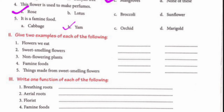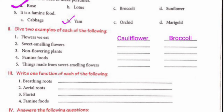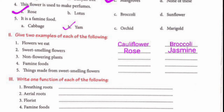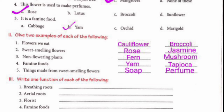Question number 2: Give two examples of each of the following. First, flowers we eat: cauliflower and broccoli. Second, sweet smelling flowers: rose and jasmine. Third, non-flowering plants: fern, mushroom. Fourth, famine food: yam, tapioca. Fifth, things made from sweet smelling flowers: soap and perfume.